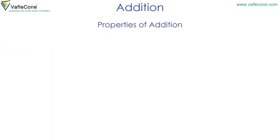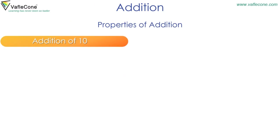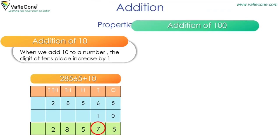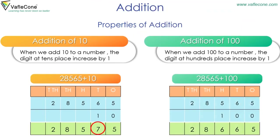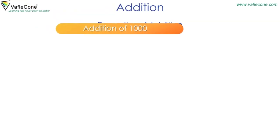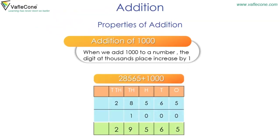Properties of addition. Addition of ten: when we add ten to a number, the digit at the tens place is increased by one. Addition of thousand: when we add a thousand to a number, the digit at the thousands place is increased by one.